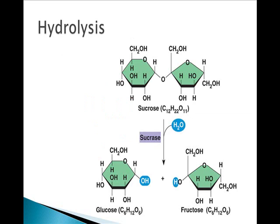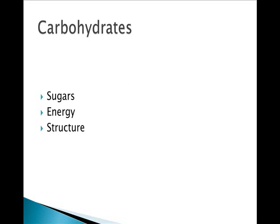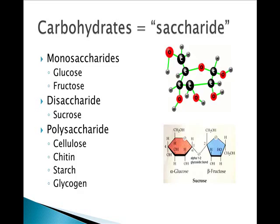The first of the four macromolecules we're going to look at are carbohydrates. These are commonly called sugars and they perform functions in energy and providing structure to different components of cells. Carbohydrates have the suffix saccharide. Monosaccharides are the monomer units, and the two most common are glucose and fructose.